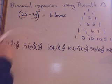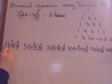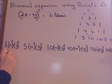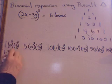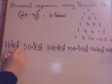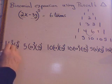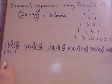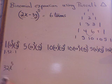Let's simplify the first term. We have a one times two to the fifth, which is 32, times negative three to the zero — anything to the zero power is one. So the coefficient is 32, and we have x to the fifth with no y.